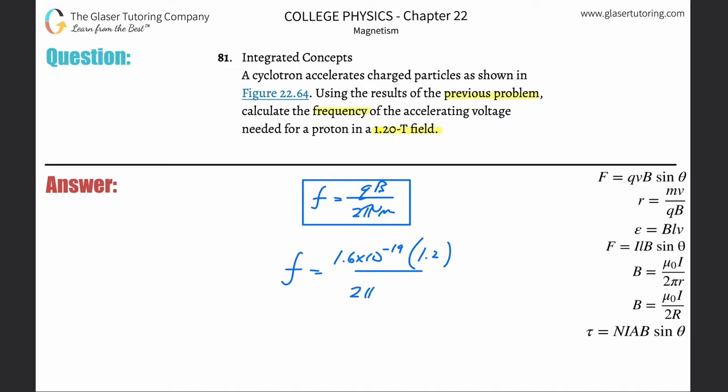Divided by 2 pi multiplied by the mass. Mass of a proton is 1.67 times 10 to the minus 27.